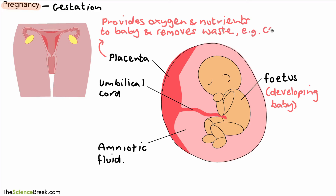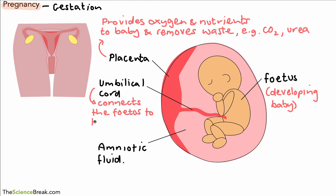For example, carbon dioxide — remember the baby is not breathing, so we need carbon dioxide removed via the umbilical cord — and also urea, which normally produces urine in children and adults. The umbilical cord connects the fetus to the placenta; nutrients go in and waste products come out.